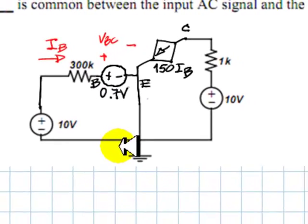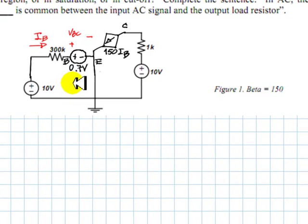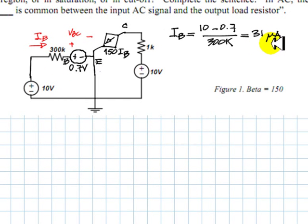Let's solve that circuit. I'm only going to write the base current equation, which is 10 minus 0.7 divided by 300k, which equals 31 microamps.